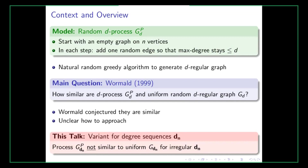Quite interestingly, this process is not so well understood. In fact, the main question from Wormald from 1999, which is still open until now, is to answer: how similar are the d-process and the uniform random d-regular graph? By uniform random d-regular graph, I mean the random graph you get by uniformly sampling from the set of all d-regular graphs. Wormald conjectured that they are similar, but it's really unclear how to approach this problem from a technical side.